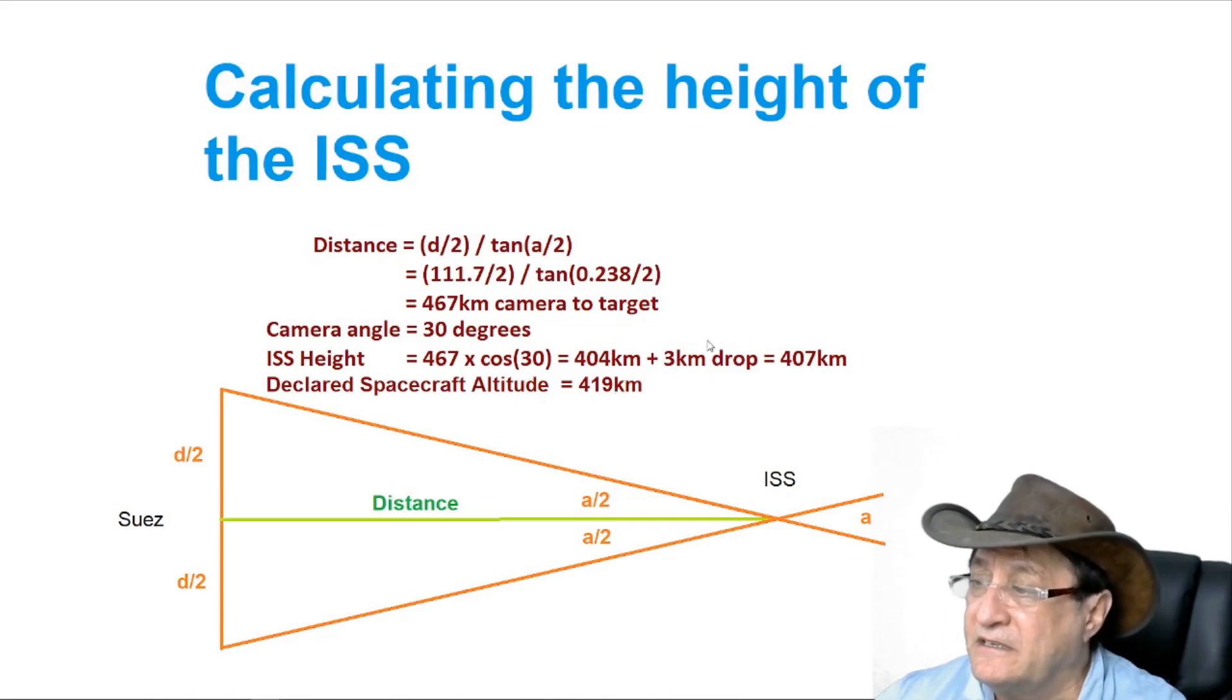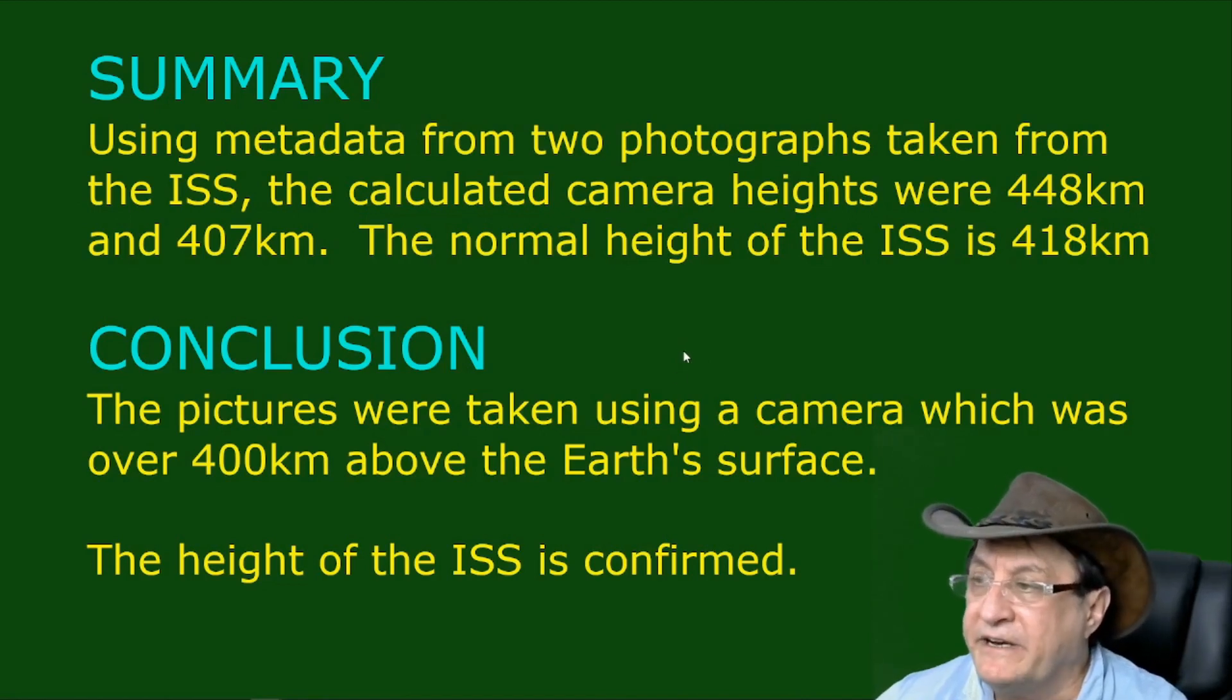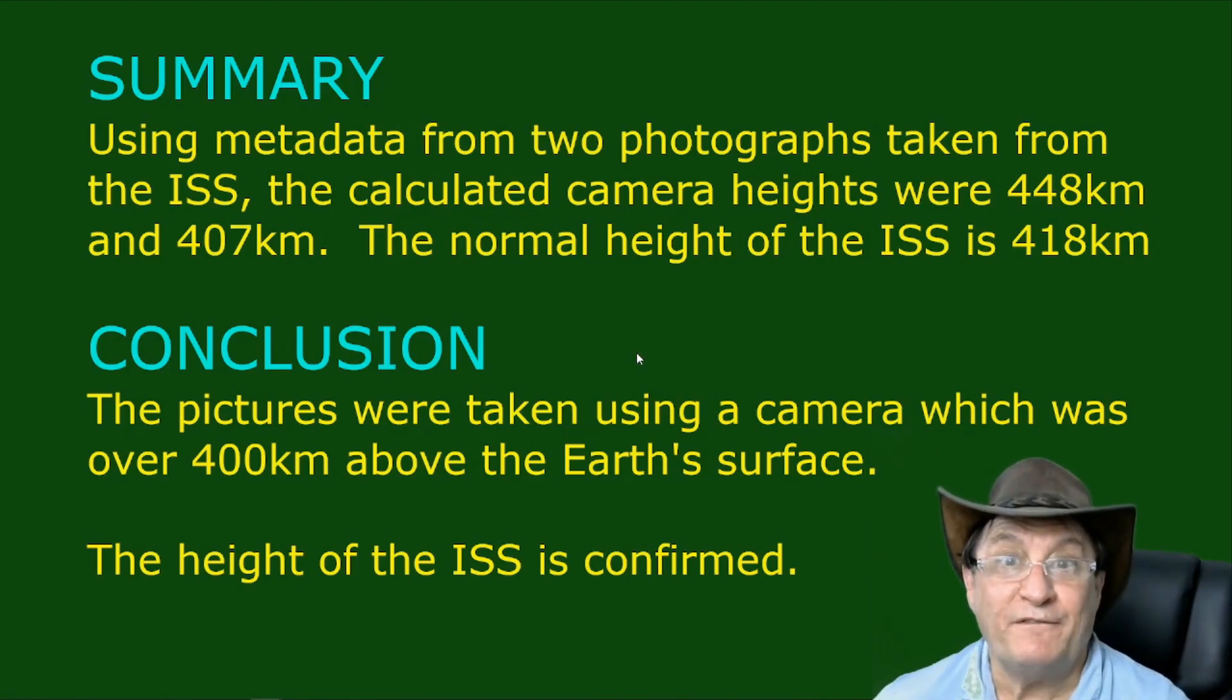So in summary, using metadata from two photographs taken from the ISS, the calculated camera heights were 448 kilometers and 407 kilometers. The normal height of the ISS is 418 kilometers, and the conclusion is the pictures were taken using a camera which was over 400 kilometers above the earth's surface, and the height of the ISS is confirmed. What do you think about that flatties?